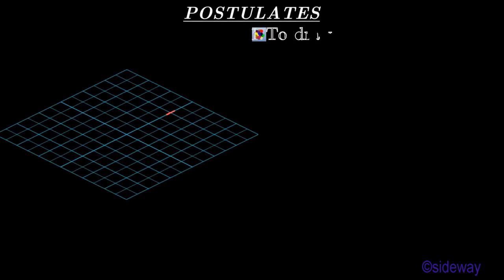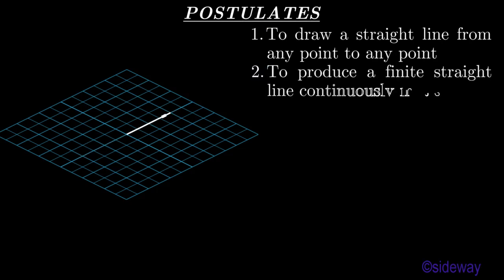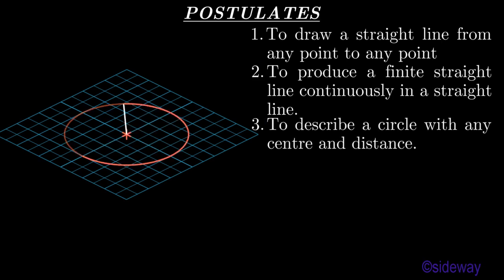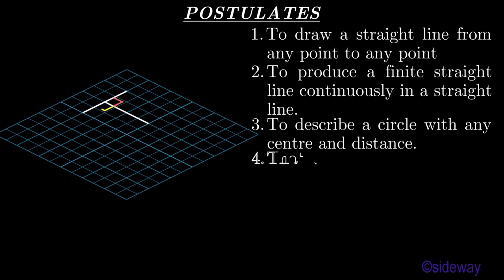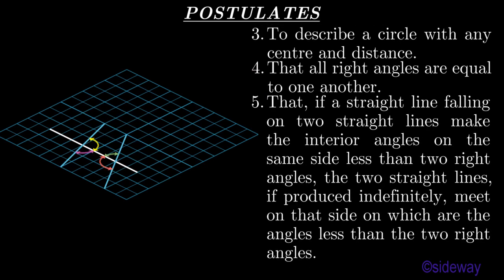Euclid's Elements Book 1. Postulates. To draw a straight line from any point to any point. To produce a finite straight line continuously in a straight line. To describe a circle with any center and distance. That all right angles are equal to one another. That if a straight line falling on two straight lines makes the interior angles on the same side less than two right angles, the two straight lines, if produced indefinitely, meet on that side on which are the angles less than the two right angles.